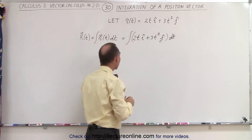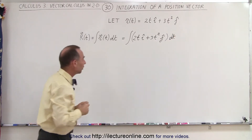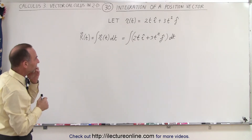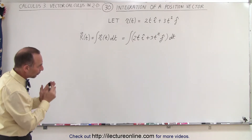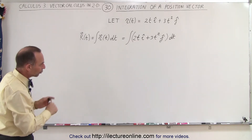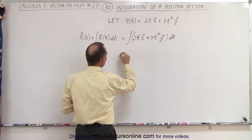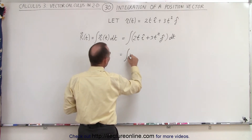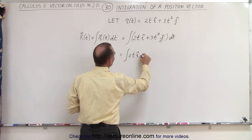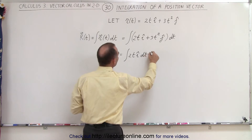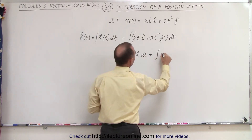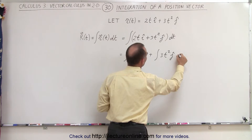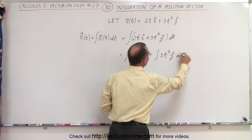Notice that these are not definite integrals — they're indefinite integrals. Now we're going to separate those two into two separate integrals, so this can be written as the integral of 2t in the i direction dt, plus the integral of 3t squared in the j direction times dt.